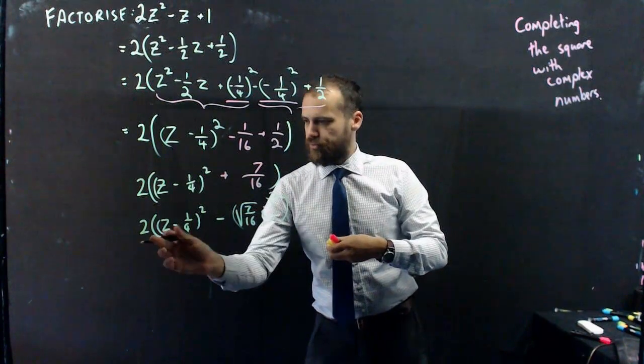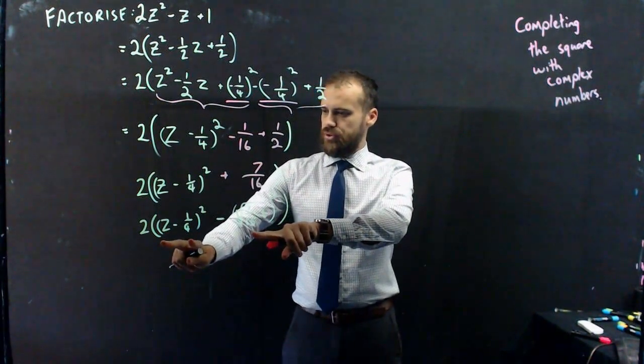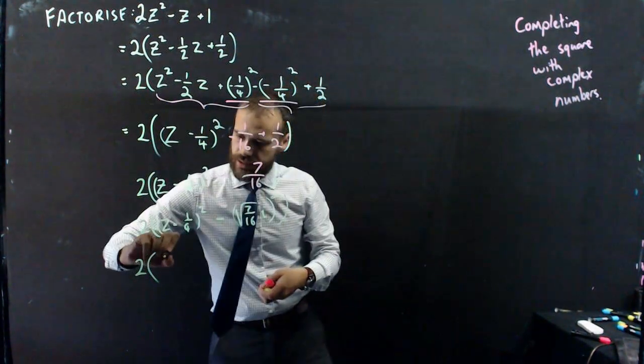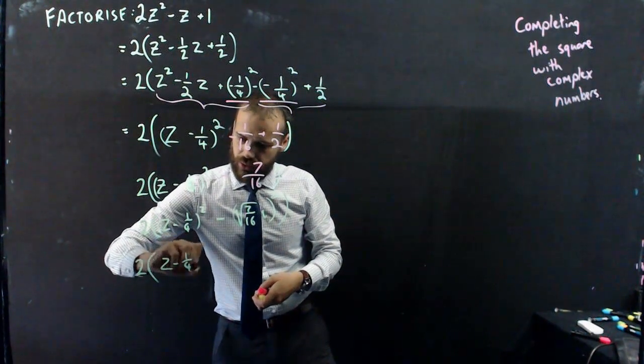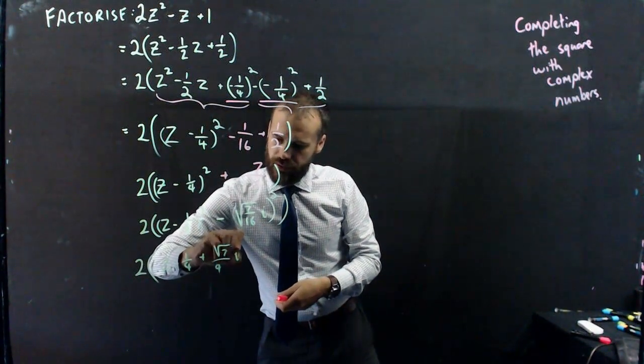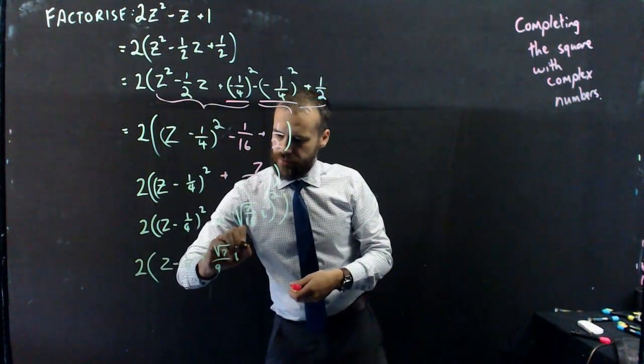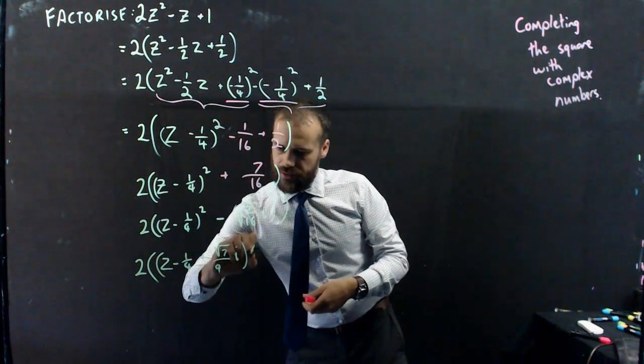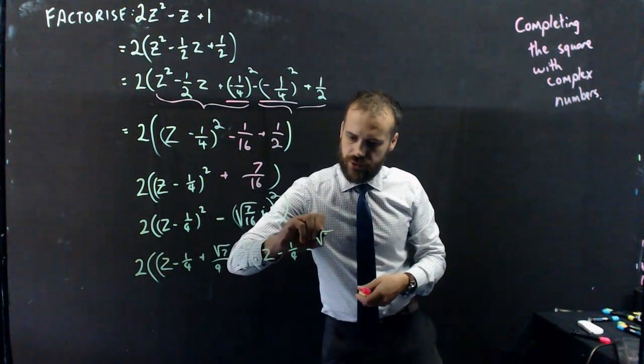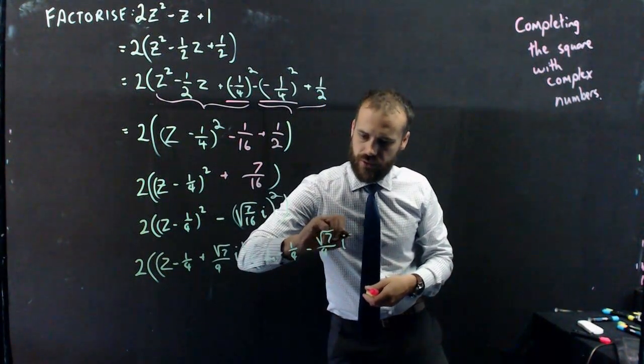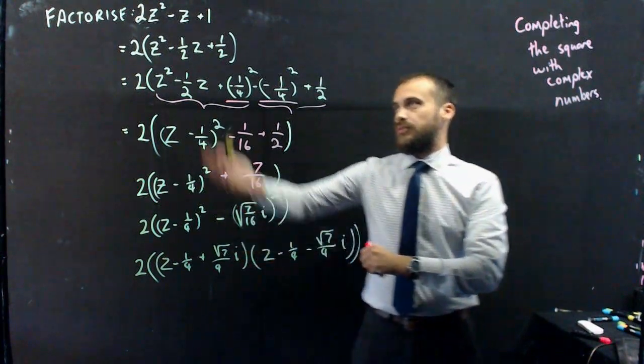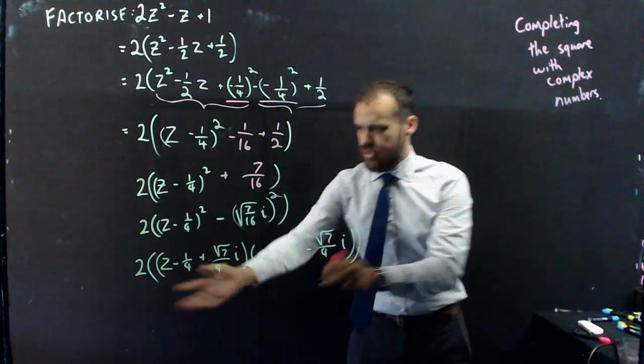So, this is a difference of 2 squares. So, 2 times z minus 1 quarter plus root 7 on 4 i times z minus 1 quarter minus root 7 on 4 i. All right, and now we have it fully factorized. We've gone from 2 z squared minus z plus 1 to this monster.